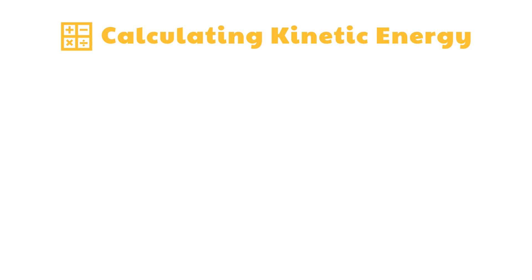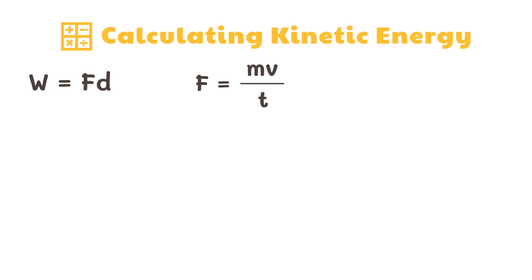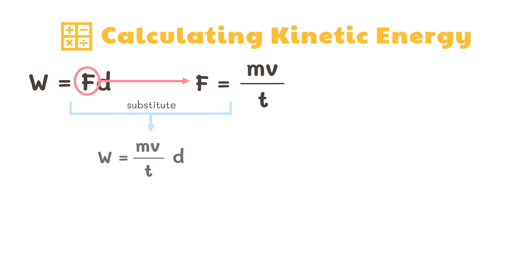Now let's derive the formula for kinetic energy from the equations we previously discussed. Work is equal to force times displacement, and force is equal to mass times velocity divided by time. Substituting force into the work formula, we get: work equals mass times velocity divided by time, times displacement.